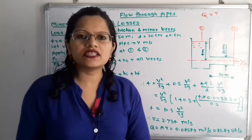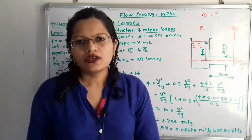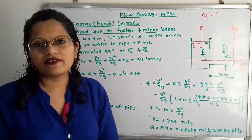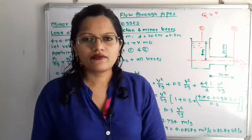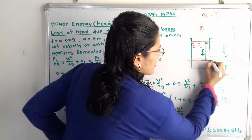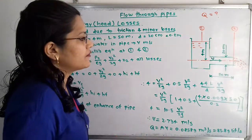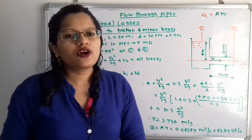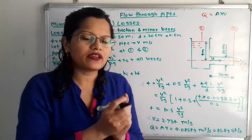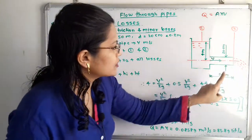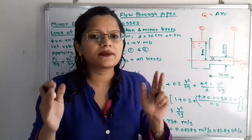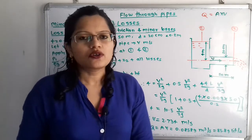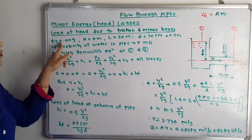We have to find the discharge, or rate of flow through this pipe. The rate of flow Q = A × V, where velocity V is in the direction of flow — towards the right. The water is flowing through this pipe of length 50 m, so we must consider the head loss due to friction. The coefficient of friction is given as F = 0.009.